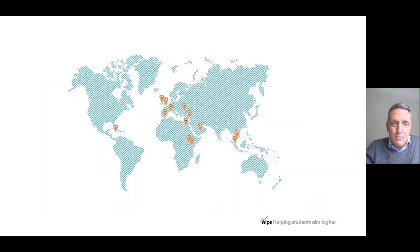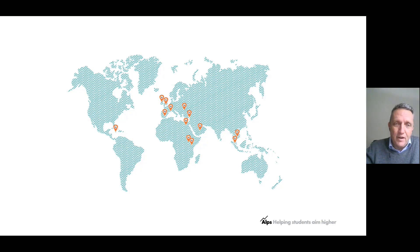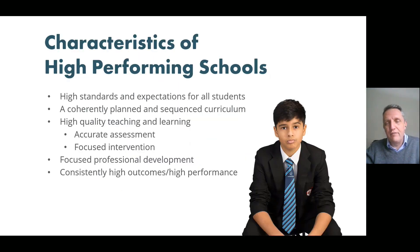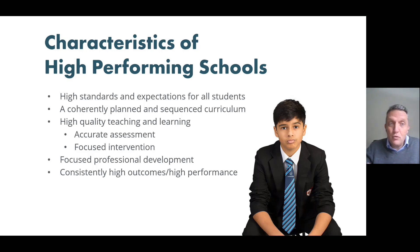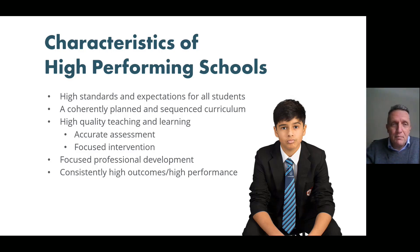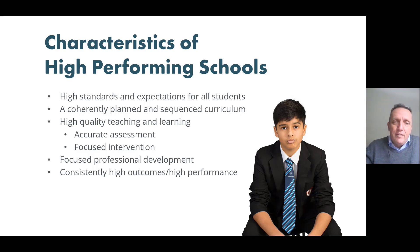Alps is very privileged to work with a large number of leaders, both in the UK and across the globe, including colleagues in a number of very high-performing schools. When we talk to colleagues in high-performing schools about the characteristics that define those schools, they'll often come back with a very similar list of features: high standards and expectations, a coherently planned curriculum, high-quality teaching and learning, focused professional development, and consistently high outcomes from students.